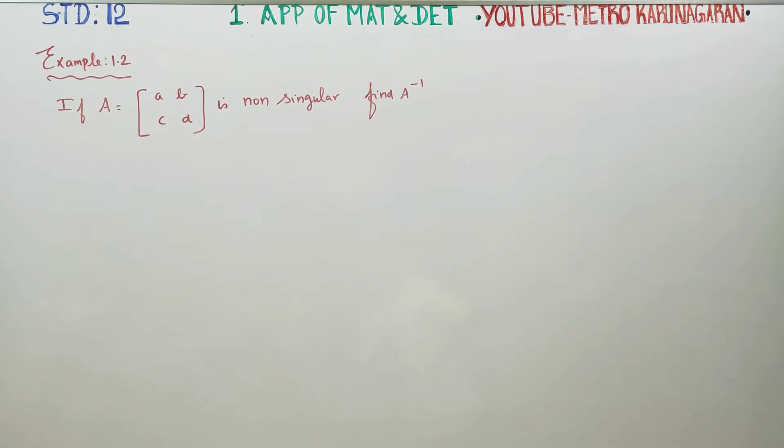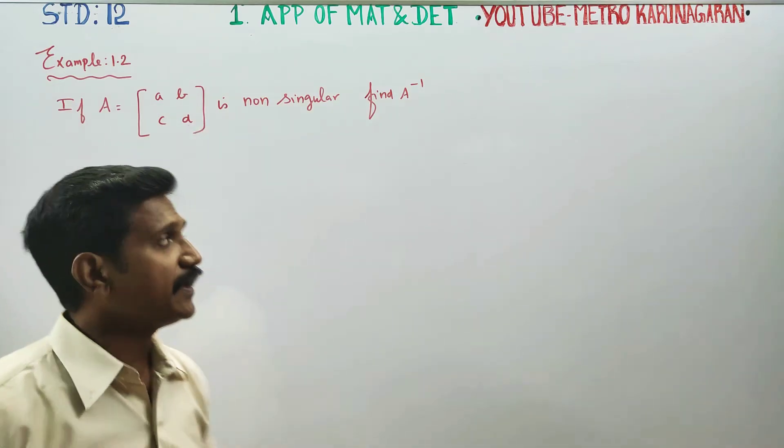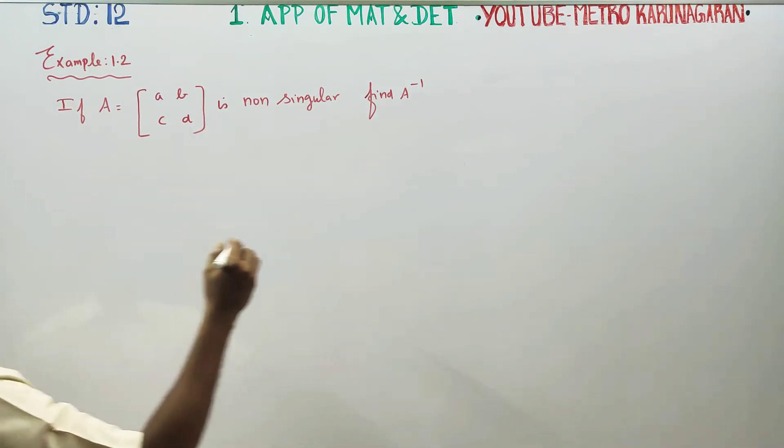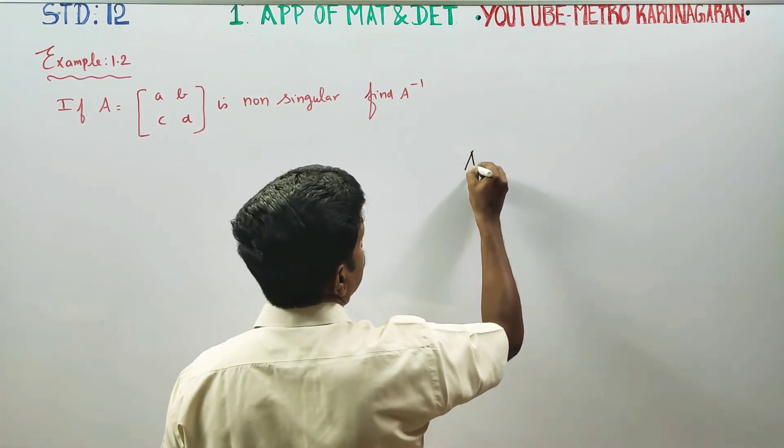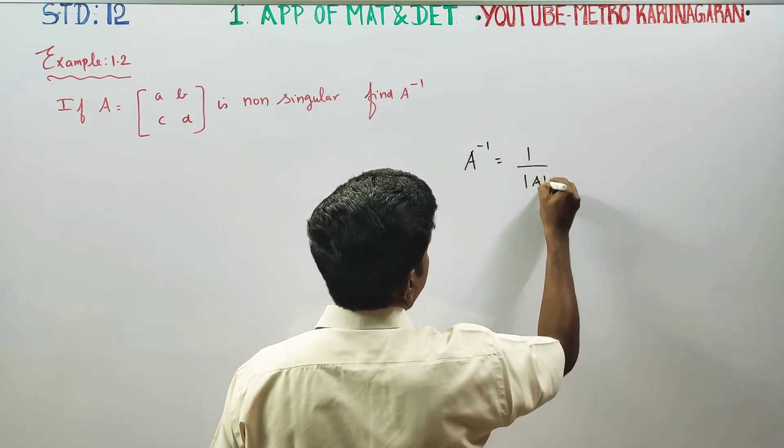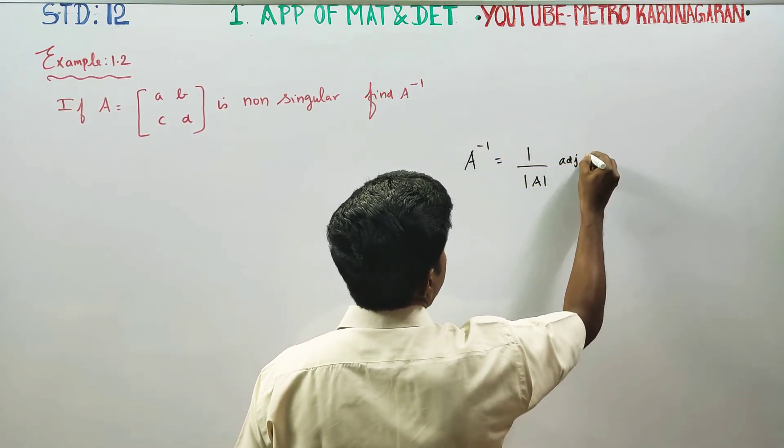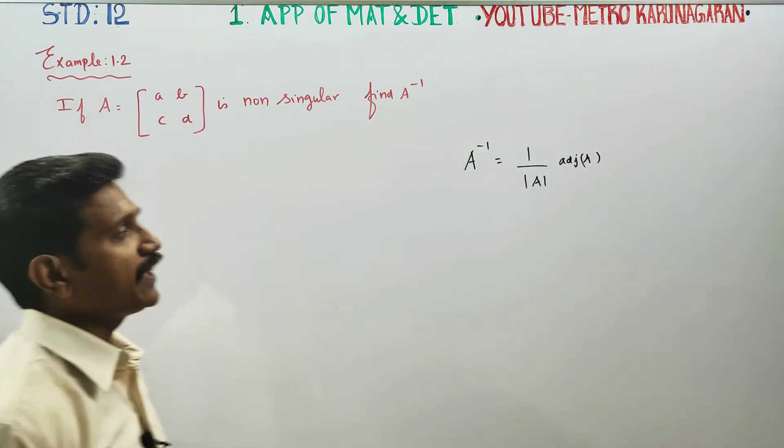Dear 12 standard students, in example 1.2, chapter number 1, you have to find A inverse. To find A inverse, the definition for A inverse is 1 by determinant A into adjoint A. This is the formula for A inverse.